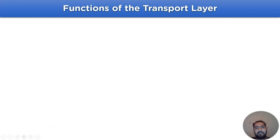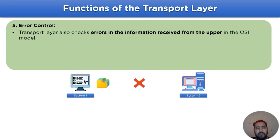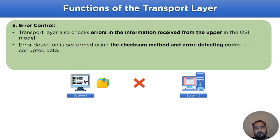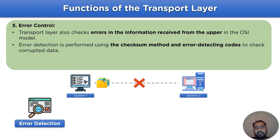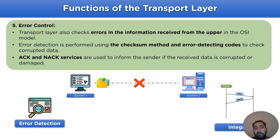The last function of the transport layer is error control. The transport layer also checks errors in the information received from the upper layer in the OSI model. Error detection is performed using the checksum method or error detecting codes to check corrupted data. Acknowledgement and no-acknowledgement services are used to inform the sender if the receiver has received corrupted or damaged data through the network channel.